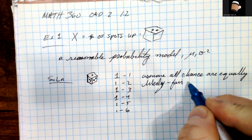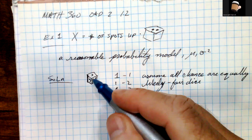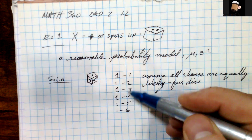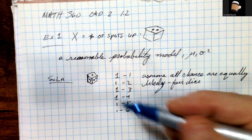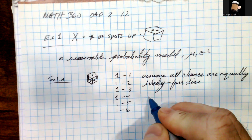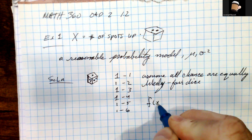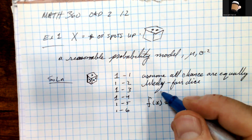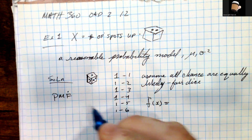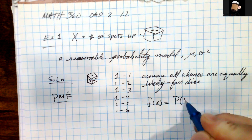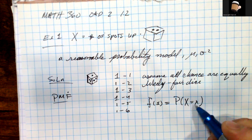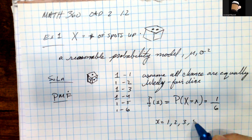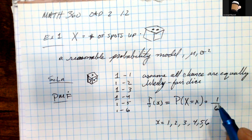Oftentimes we call this a fair dice. Since we're assuming that's the case, each time we roll, the frequency of each outcome — 1, 2, 3, 4, 5, or 6 — is exactly one out of six. So we can reasonably define the PMF of this discrete random variable as f(x) = 1/6, where x equals 1, 2, 3, 4, 5, or 6.